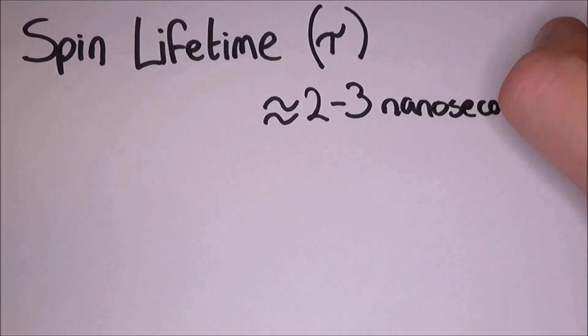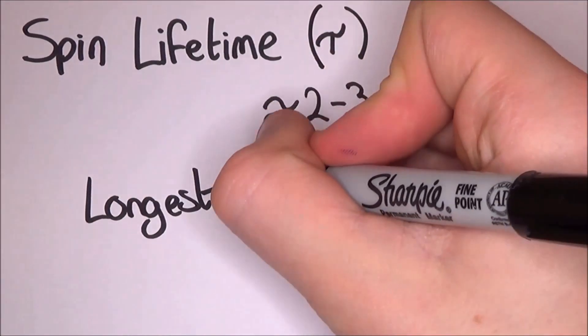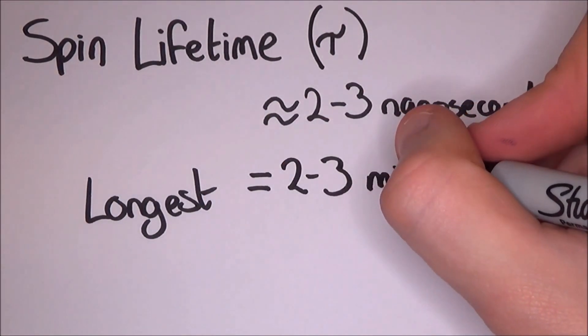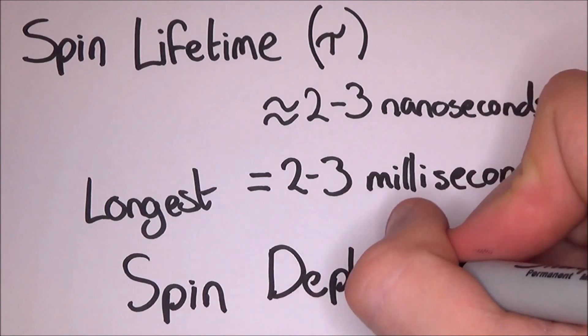Normally, spin lifetimes are really really short, less than a nanosecond. But a great deal of research is going into extending these lifetimes. Some of the longest we've got is a few milliseconds, and that's by using a thing called spin dephasing, where the electrons will all have the same spin but it will slowly come out of sync with each other.